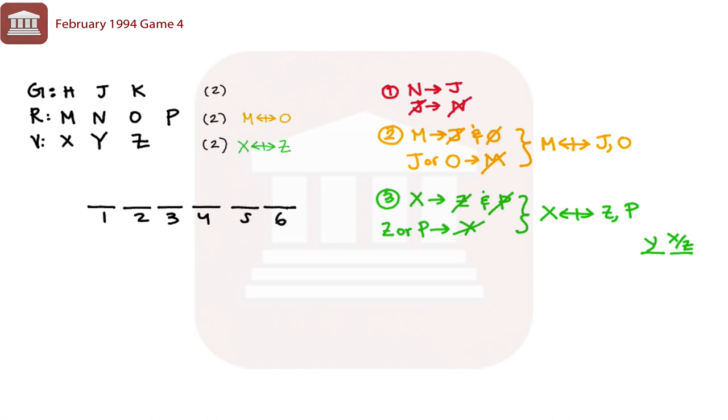Now we can go to rule number four. If both J and O are selected, then J is played at some time before O. So if O is sometime before J, then J is not selected or O is not selected.